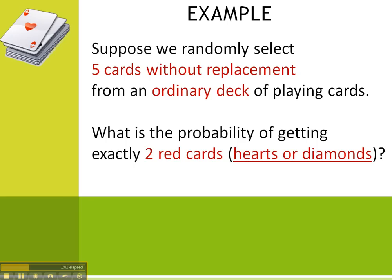There are four different suits or kinds of cards. There are 13 hearts, 13 diamonds, 13 clubs, and 13 spades. We want two of the red ones, which are hearts or diamonds. So, 13 and 13.